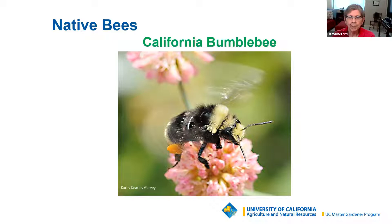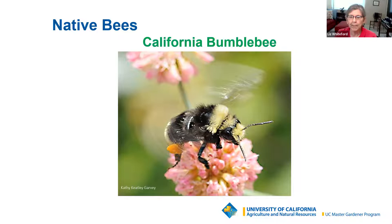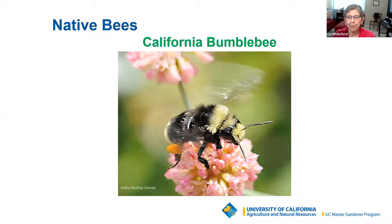Seventy percent of native bees nest in the ground. The other 30% nest in cracks and crevices in nature — perhaps in a rocky wall where they lay their eggs. Mason bees are the first native bees to come out in the spring, when the first fruit trees open with blossoms — they're with us for maybe four to six weeks. The California bumblebee is the most common in California, and only about four species of bumblebees in the US are somewhat aggressive.